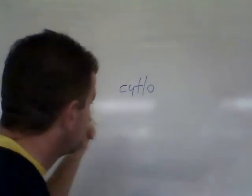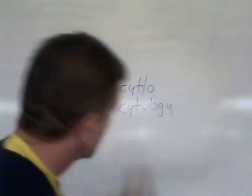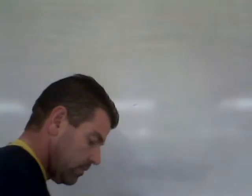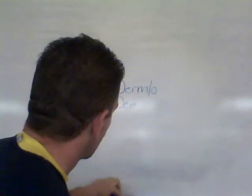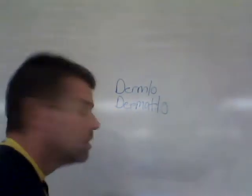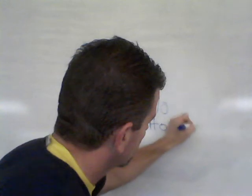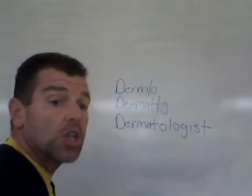'Cyto' means cell. There may be a department in a hospital called cytology — the cytology department would study cells. 'Dermato' or 'dermo' — both of these combining forms mean skin. A dermatologist uses the combining form dermato, meaning skin, plus the suffix 'logist,' meaning one who specializes, so a dermatologist is one who specializes in the skin.